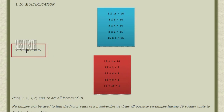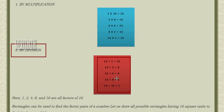Let us see how to find the factors using the division method. 16 divided by 1 is 16, 16 divided by 2 is 8, 16 divided by 4 is 4, 16 divided by 8 is 2, 16 divided by 16 is 1. We divide the number starting with 1, 2, and so on — taking only those numbers which are completely divisible.